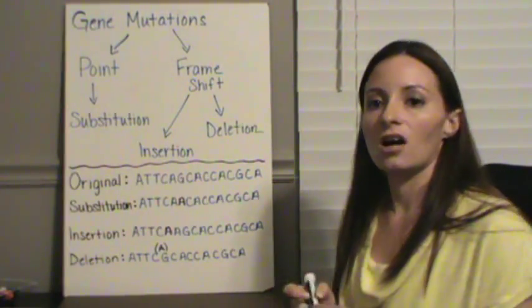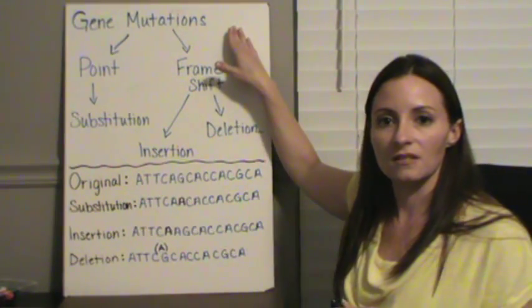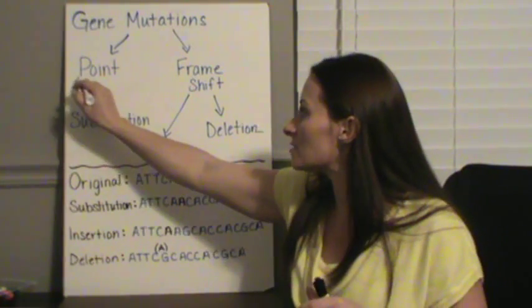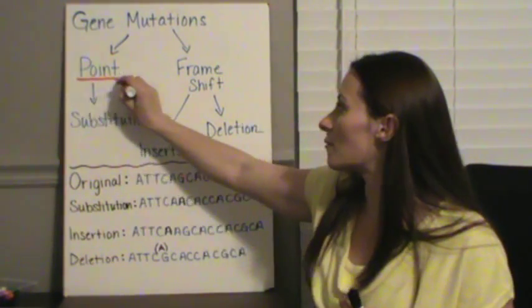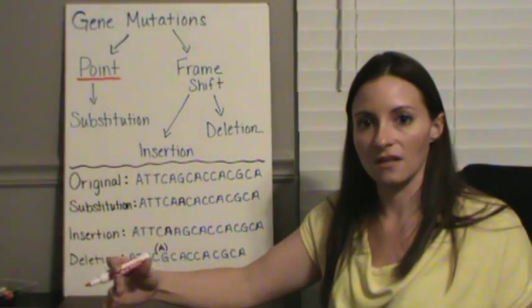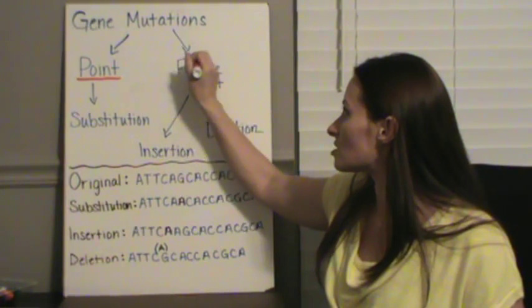So the first thing are gene mutations. There are two types of gene mutations. Point mutations happen at one point, changing one point within your DNA strand, and that's it, or frameshift mutations.